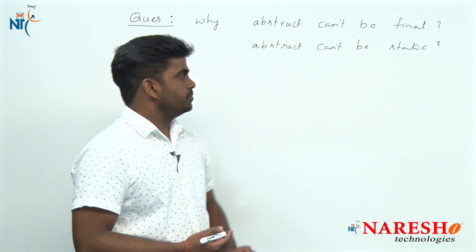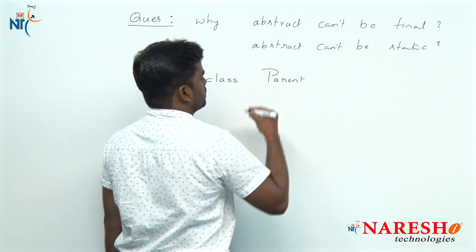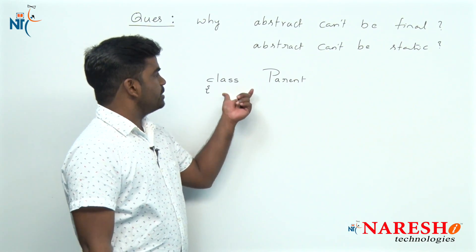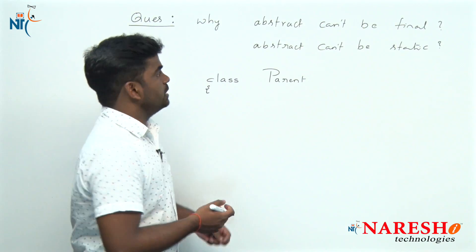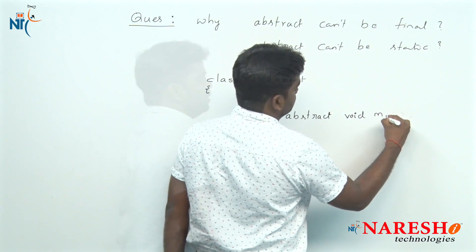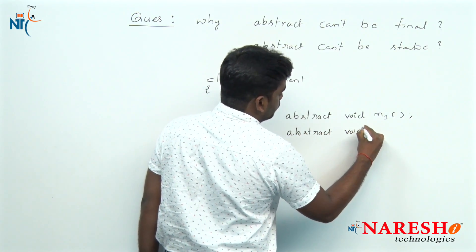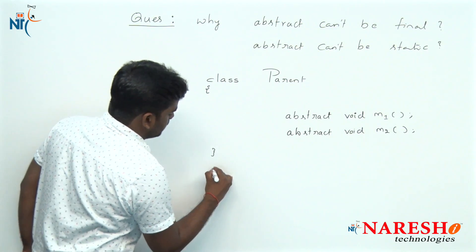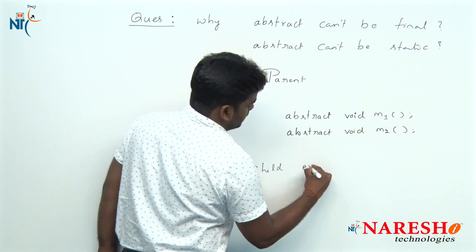To answer this, we need to discuss a parent-child relationship. We have a parent class, and inside the parent class we are declaring two abstract methods: abstract void m1 and abstract void m2. We also have a child class that extends the parent class.